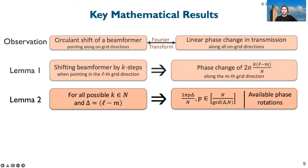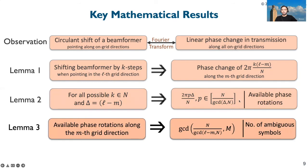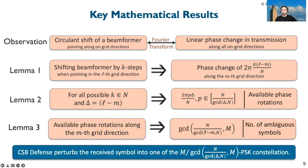And in lemma three, we show that out of all available phase rotations, only some of those rotations create ambiguity when being used with MPSK constellation. Based on results from number theory, we characterize this equation. Hence, using CSB defense perturbs the received symbols such that it is equivalent of using a part of constellation instead of whole along the unintended directions. And as also described in the paper, in most cases, this is equivalent to only using one PSK constellation, which gives zero information.